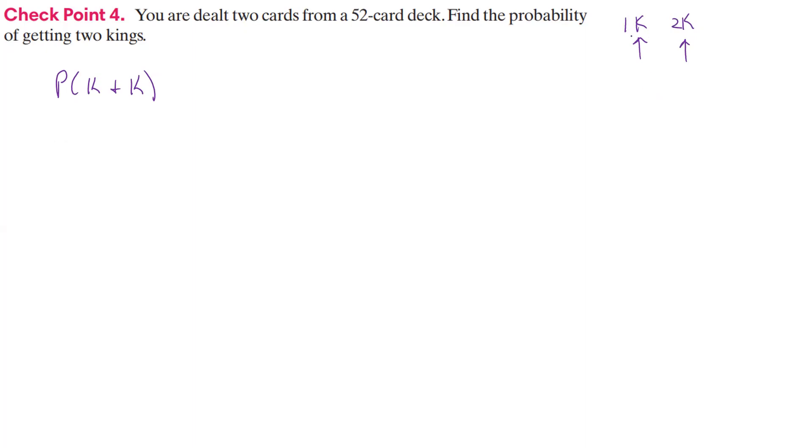So in the first case, how many kings are possible? Well, there's going to be four possible kings because that's the very first card you're pulling out. So there's four possible kings. And how many cards are in the deck at that point? Well, there's 52 cards in the deck.